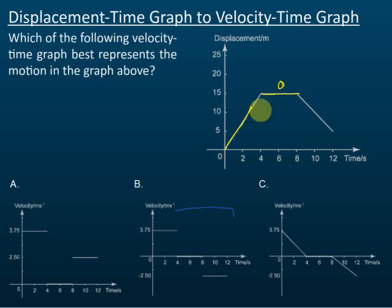The gradient is equal to 15 over 4, 15 over 4, which is equal to 3.75. So that is the speed, 3.75 meters per second.